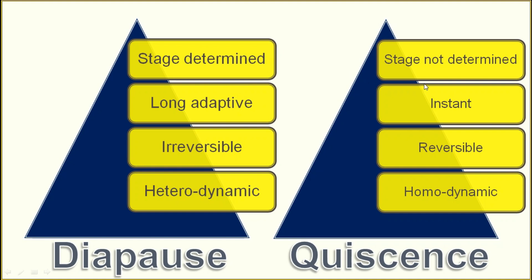In comparison: for diapause, the stage is specific; for dormancy, the stage is not specific and may happen anytime during an unfavorable season. Diapause is long adaptive — the insect survives for a longer period even after the unfavorable situation ends. Dormancy is instant — it starts and stops instantly. Diapause is irreversible — the stage changes after diapause. Dormancy is reversible — once the unfavorable situation passes, the insect resumes normal activity. Diapause is heterodynamic (many processes involved); dormancy is homodynamic (instant reaction to stimuli).